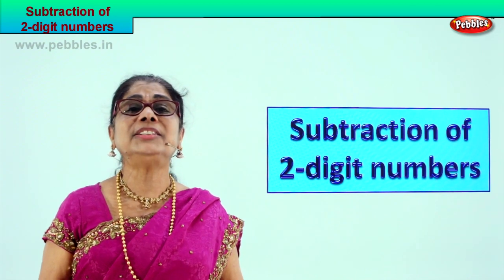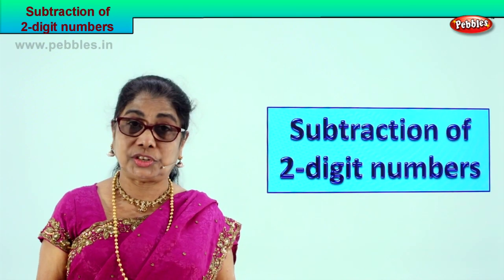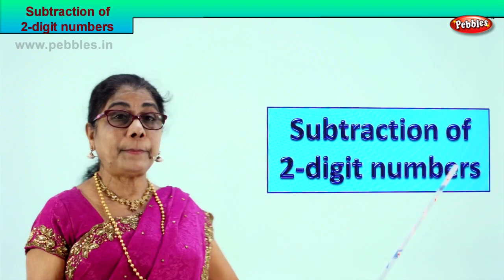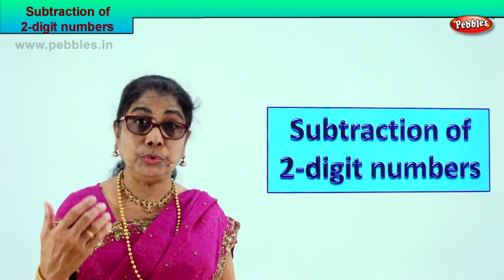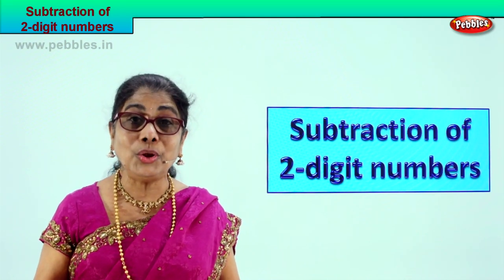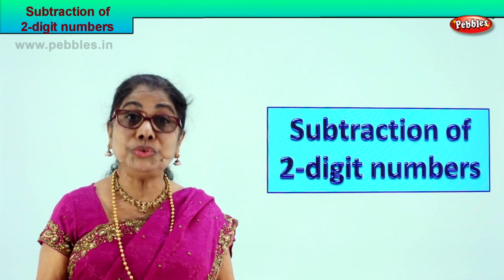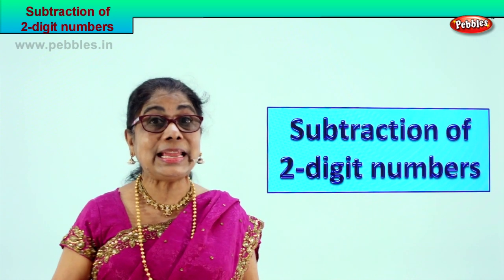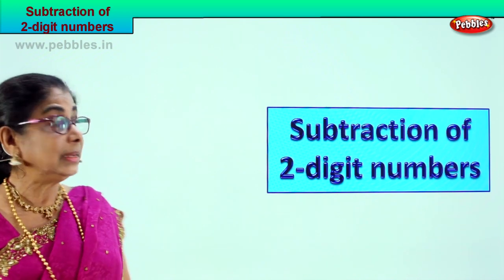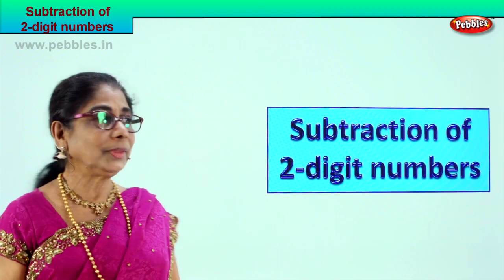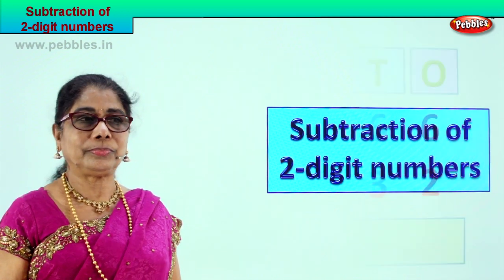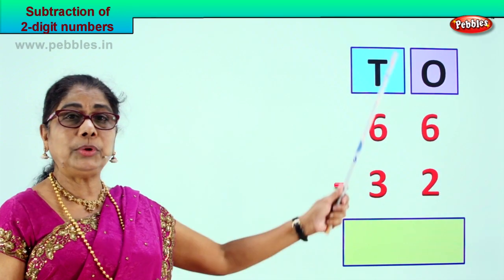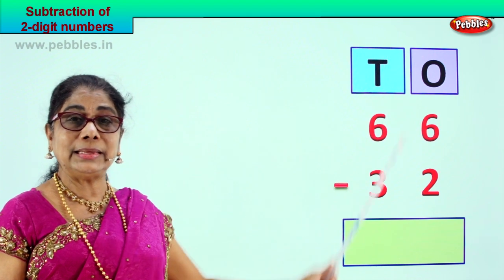Hi children, let's learn today some subtraction — we are going to do it with two digit numbers. Subtraction of two digit numbers, that's what we are going to learn. Let's look at the sum we have and enjoy doing it together. What is subtraction? Take away the small number from the big number. Look at our first sum — when we arrange the numbers we put them under ones and tens.